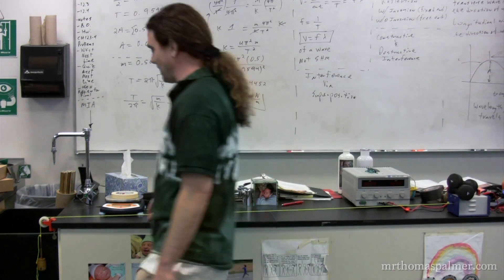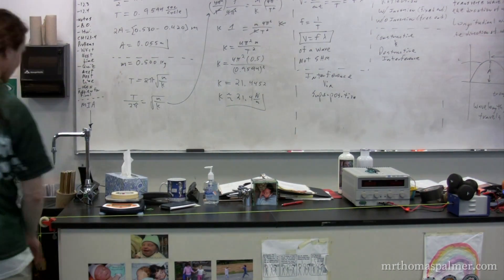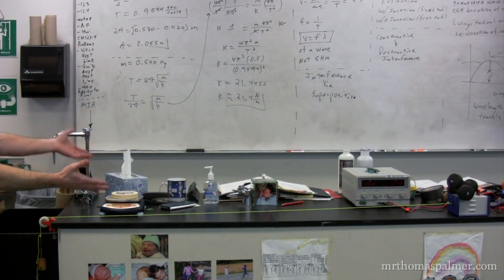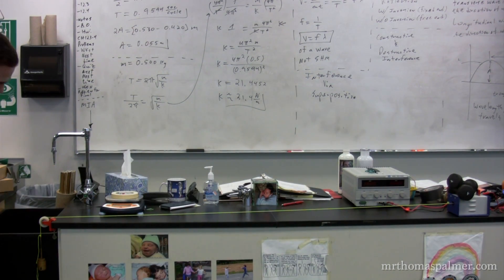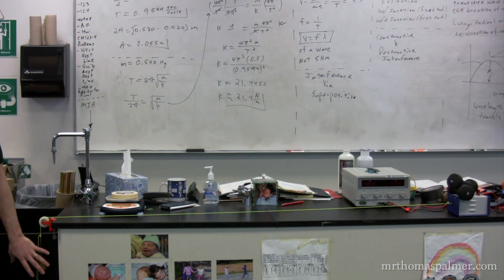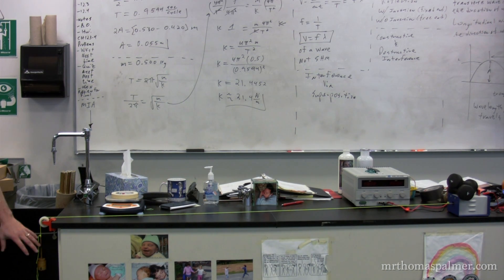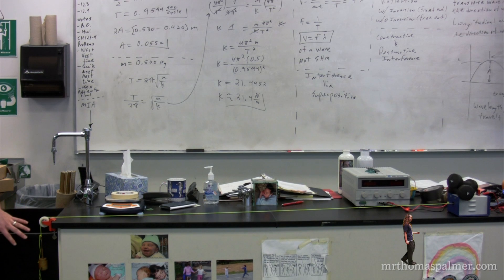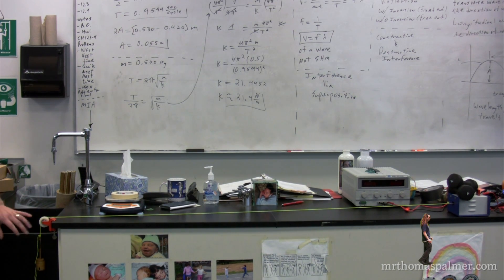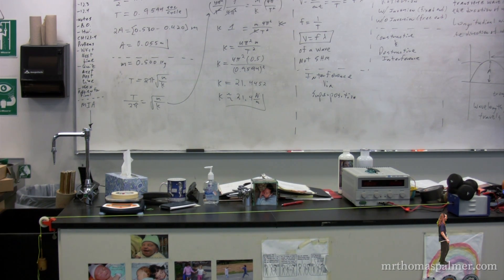In front of you is a yellow string, so you can see a little better. On the left-hand side, we have some masses. We have a specific mass, and the reason we have masses over here is to have a tension — a consistent tension that should not change when we do this little experiment, this demonstration.